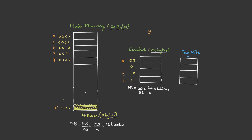Now let us assume this is a two-way set associative cache, so the value of k is 2. We need to partition the cache into sets. The number of sets equals number of lines divided by k — that is 4 lines divided by k value 2, giving us 2 sets, or 2 power 1 sets. So we need 1 bit for set indexing.